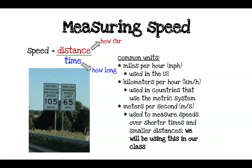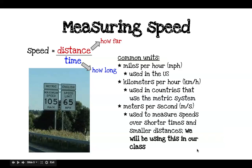What we're going to be using in our class is meters per second, abbreviated M/S. This is used to measure speeds over shorter times and smaller distances. We'll be using this because what we're measuring are things over a very small distance and in a relatively short amount of time, so be familiar with meters per second.